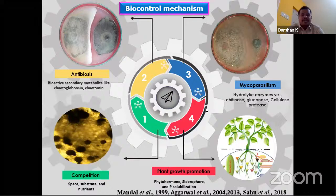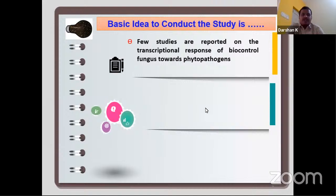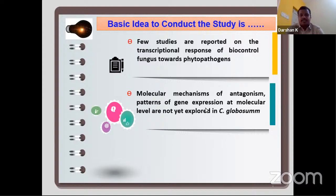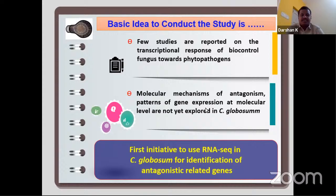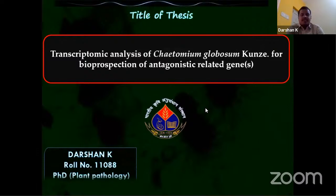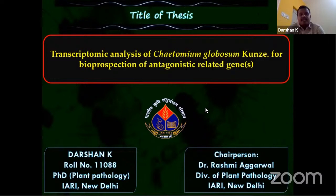Very few studies have addressed the transcriptional response of this biocontrol agent towards phytopathogens, and the molecular events and biosynthetic pathways have not been elucidated in Chaetomium globosum. This is the first initiative to use RNA-seq for identification of antagonistic-related genes in Chaetomium globosum. The thesis is entitled: Transcriptomic Analysis of Chaetomium globosum: Bioprospection of Antagonistic-Related Genes.